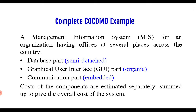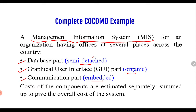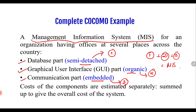As an example, consider a Management Information System (MIS) for an organization with offices across the country. We can break down the entire MIS project into: a database part (semi-detached), a graphical user interface part (organic), and a communication part (embedded). The cost of each component is estimated separately and summed to give the overall cost. This approach also helps identify errors at an earlier stage.